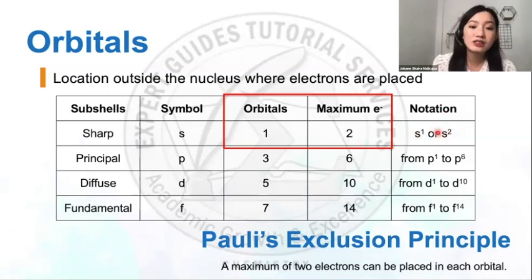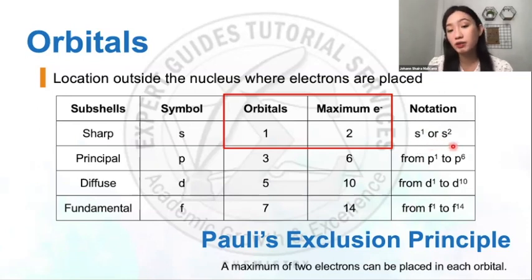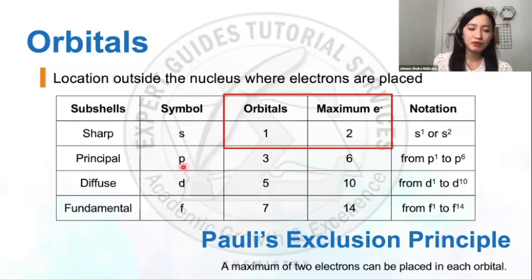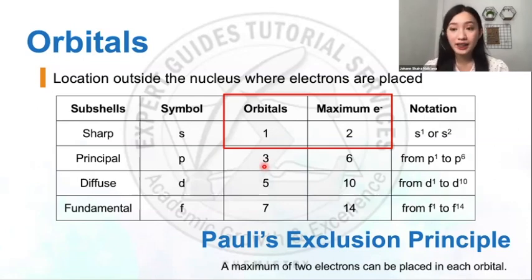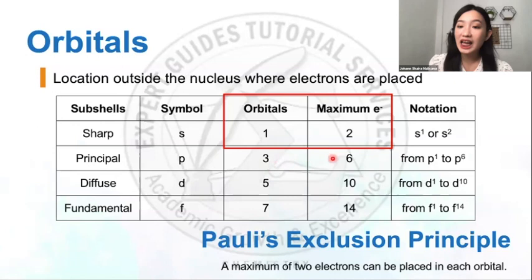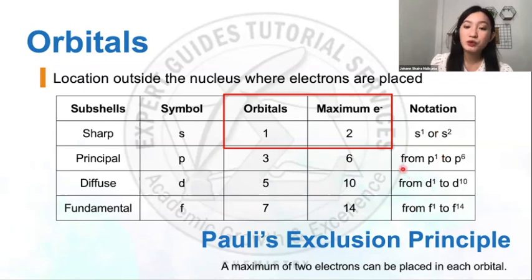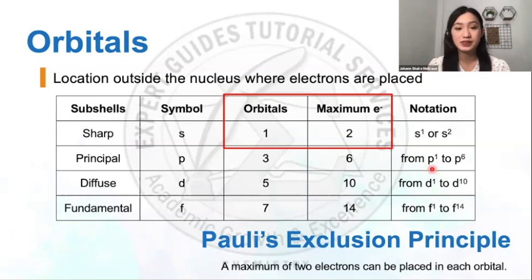Proceeding to the P orbital: the P sub-level has a total of three orbitals. Since an orbital has a maximum of two electrons, three times two gives a total of six electrons for the P sub-shell. So the notation would be P1, P2, P3, P4, P5, and P6.